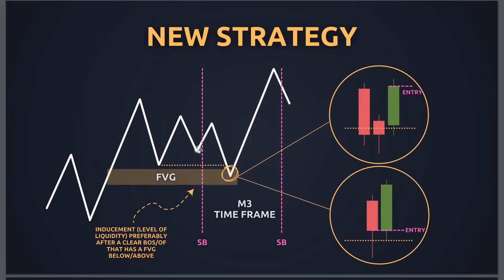In the old strategy we only focused on the fair value gap — mostly the first one in the silver bullet session. This new strategy is more advanced: we focus on inducement and liquidity. We have the silver bullet timing — SB for the PM session, AM session of New York, and the London session. What we look for is an uptrend or a break to the upside, then a fair value gap with a low that is either above or inside the fair value gap. We adjust and mark only the unfilled part of the fair value gap.